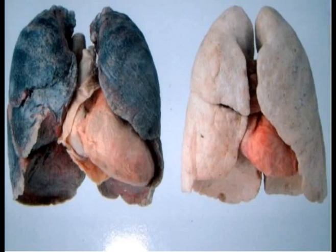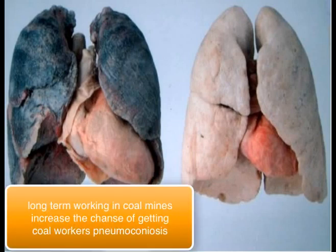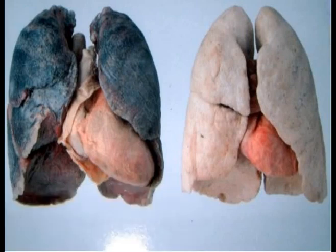So you see, to the left, the lungs are quite black. This can also occur if you have been working for a long time in a coal mine — then you will get a condition called coal workers' lung, also known as coal workers' pneumoconiosis.